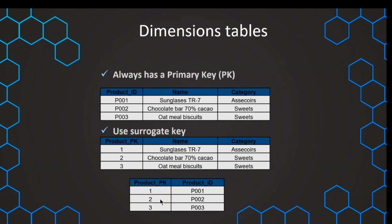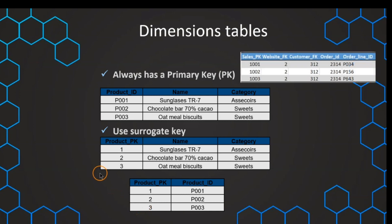What we should do is have a lookup table that gives the reference between our created surrogate key and the natural key. This can be done easily by querying in CQL the distinct values of the product ID — the natural key — and then populating a sequence next to that.